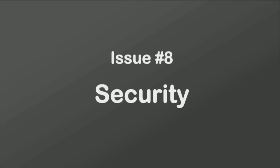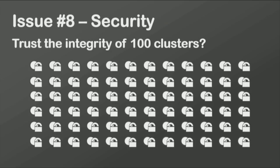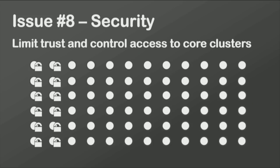Another new issue at 100 clusters: security. The issues at one cluster are similar to ten clusters, but at a hundred clusters, we run into a new security problem: I can't trust one hundred clusters. I might be able to trust ten, but a hundred is a step too far. The solution is to limit trust and access to just your core clusters. Identify the crown jewels of your application. Never put root certificates at the edge or in these hundred clusters. Always consider what belongs in trusted core clusters versus those hundred semi-trusted clusters, and be careful about where data is put and where secrets are kept.